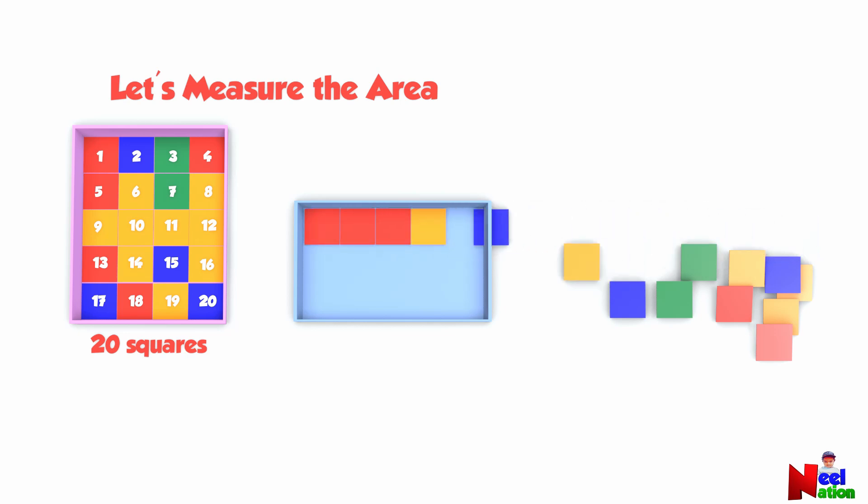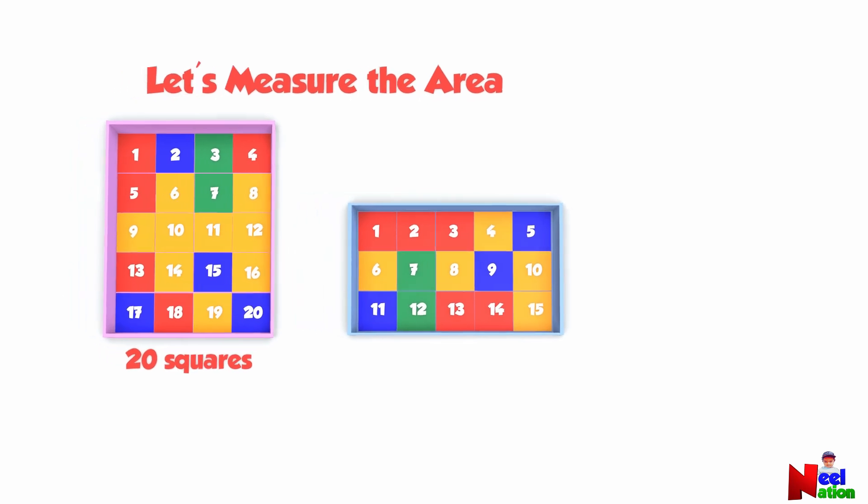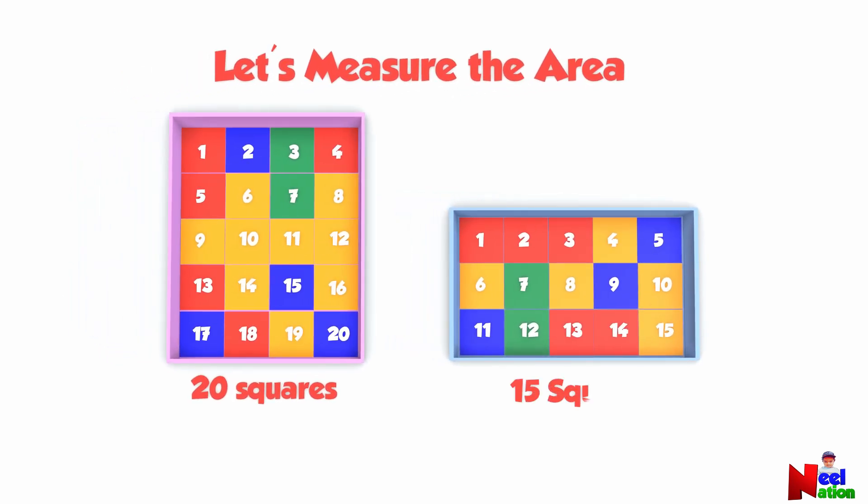Let's move on to the blue tray. 15. It takes 15 squares to cover the area of the blue tray. Area of the blue tray is 15 squares. So, you can say that the area of the pink tray is larger than the blue tray.